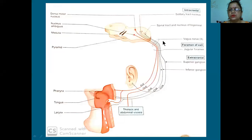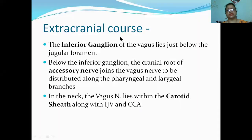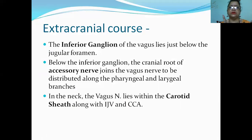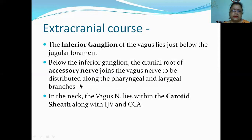Here from the jugular foramen the nerve will come out, and all five functional components will accordingly go to different areas. The intracranial part goes from the medulla to the jugular foramen. Once it comes out of the jugular foramen, that is the extracranial part. The inferior ganglion lies just below the jugular foramen at the base of the skull, where the cranial root of the accessory nerve joins the vagus to be distributed along the pharyngeal and laryngeal branches.